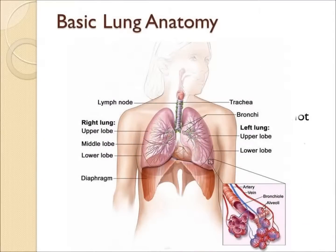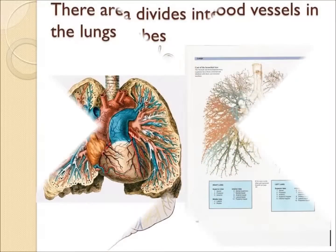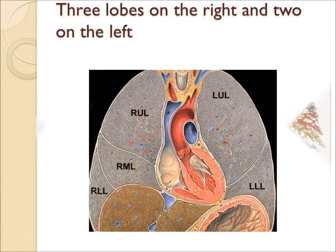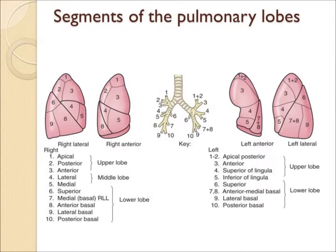The anatomy of the lung is primarily bronchi, bronchial tubes, and air sacs called alveoli. Cancer generally starts in one of the bronchi or bronchial tubes. The bronchi subdivide into smaller bronchial tubes throughout the lungs. The lungs are very vascular with extensive blood vessels, so there is a risk of bleeding. There are three lobes on the right and two lobes on the left, and the lung subdivides into segments of pulmonary lobes, which can all be numbered and labeled.